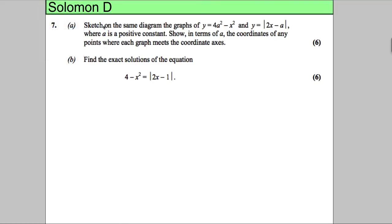In this question we're asked to sketch on the same diagram the graphs of y equals 4a squared subtract x squared and y equals 2x subtract a, where a is a positive constant, and show in terms of a the coordinates of any points where the graphs meet the coordinate axes. Okay, so let's take our time with this.